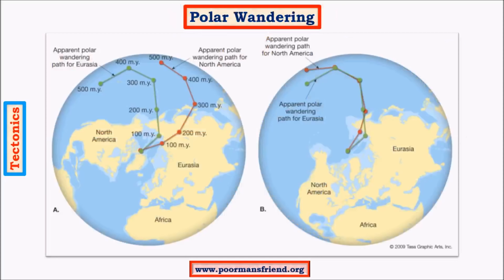Polar wandering is not different from continental drift theory. This theory explains that the poles have shifted their location from time to time, but this shift is only apparent. Earth has an axis tilted by 23.5 degrees, and as continents drifted their positions changed relative to the poles, making it appear that the poles themselves had shifted. This will be covered in more detail under continental drift theory.